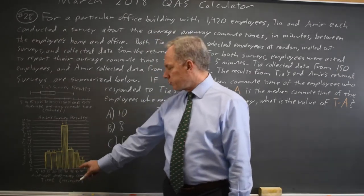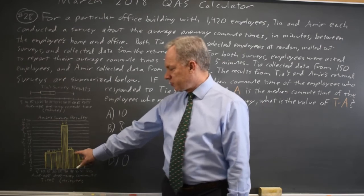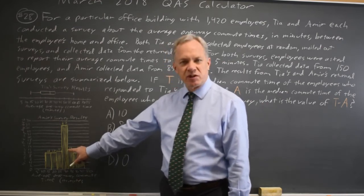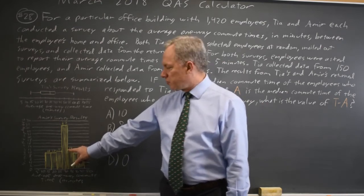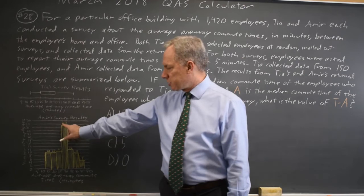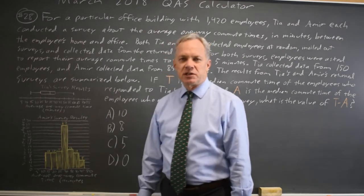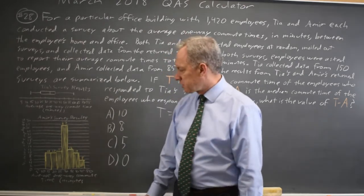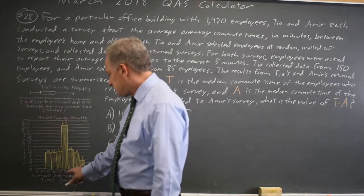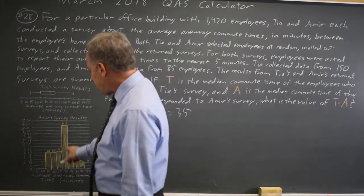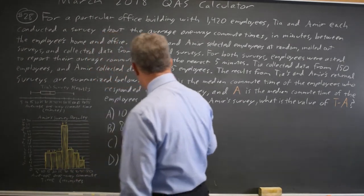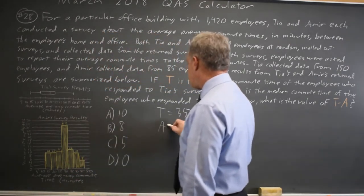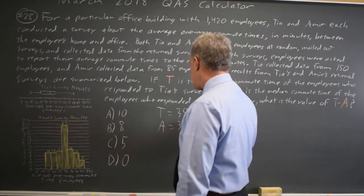Or from the top: 5 plus 10 is 15, plus 12 is 27. The 43rd value from the top is also in that tall bar, which you'd expect — that's a good way to check you've done it correctly in both cases. And the tall bar is 30, so the median for AMIR is 30.